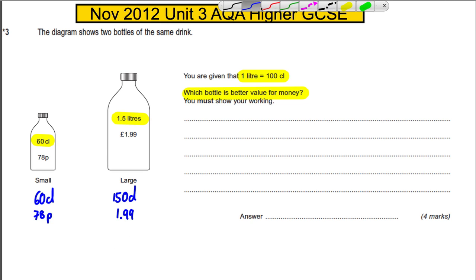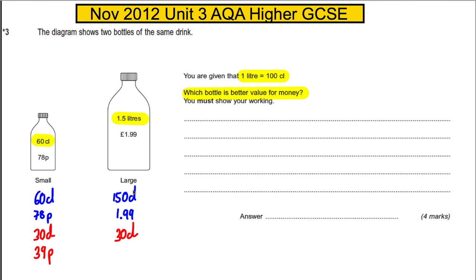So why don't we work out how much 30 centiliters costs? 30 centiliters would be half of 60, so it would be equal to 39p. And 30 centiliters of the larger bottle: we divide £1.99 by 5, which equals 0.398 pounds, or 39.8p.